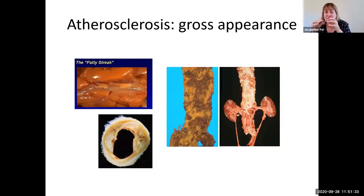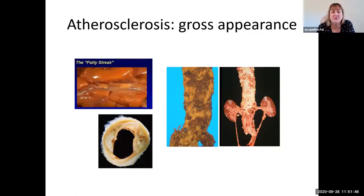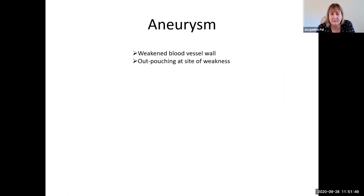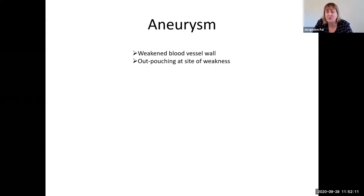Any of these plaques could result in a local thrombus. Something else that often happens with atherosclerosis — because we have damaged the wall of the blood vessel — but can also happen from other causes, is something known as an aneurysm. No matter what the cause, an aneurysm is the result of a weakened blood vessel wall, which gives us an outpouching at the site of weakness.